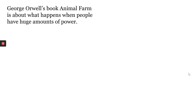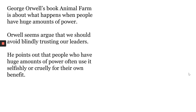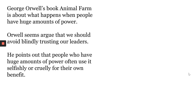Lastly, I want to talk to you about the relevance of Animal Farm to us today. Perhaps you've been wondering why we would read a 65-year-old book based on the events of a far-off country in a far-off time. However, Orwell's book has a wider message. It is about what happens when people gain a huge amount of power over other people. Orwell seems to be arguing that we should avoid blindly trusting our leaders, because he points out that people with huge amounts of power often use it selfishly or cruelly for their own benefit.